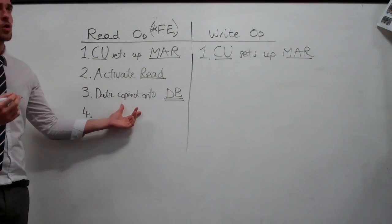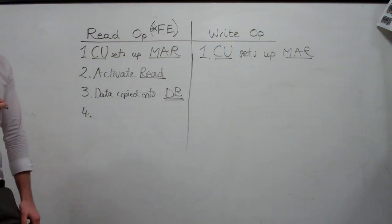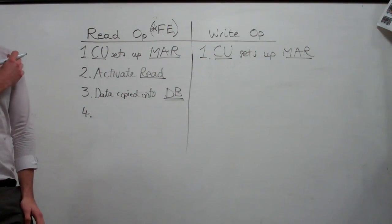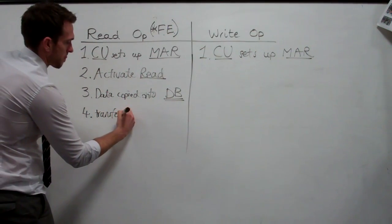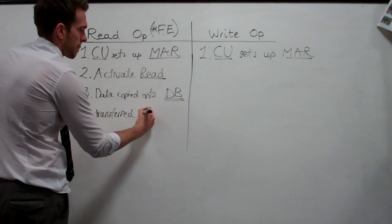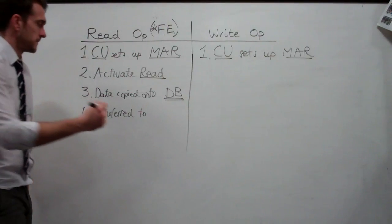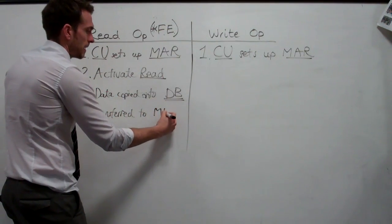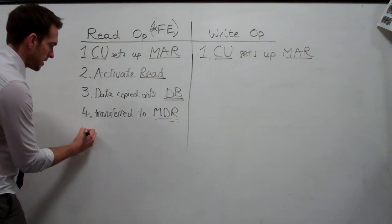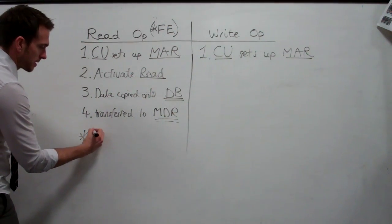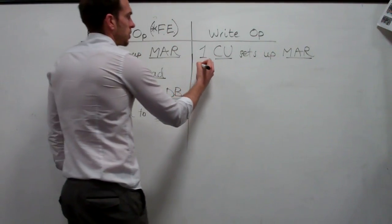Data is copied from main memory and released onto the data bus, running along the data bus and transferred into the memory data register. We'll come back to the additional step five in a second, because that's what turns it into the fetch-execute cycle. So now the write operation.